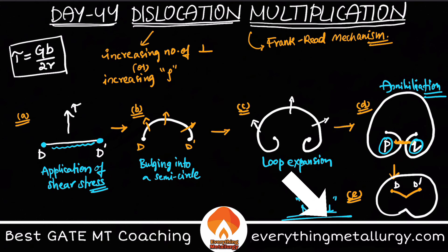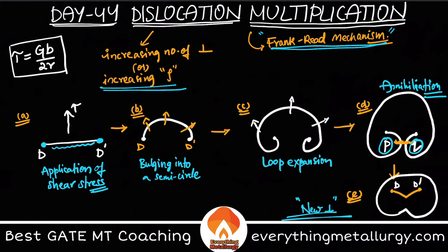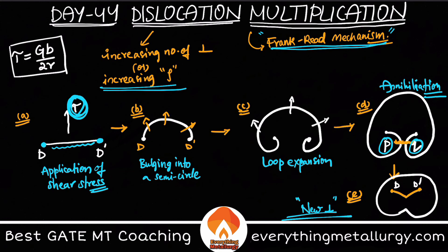In the last step, the previous dislocation remains with an expanded loop and a new dislocation is generated — this is how dislocation density increases. This is called the Frank-Read mechanism. Remember, the key criterion is that you always require a shear stress sufficient for bending, equal to Gb/2r.